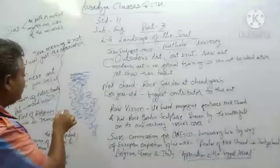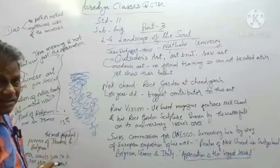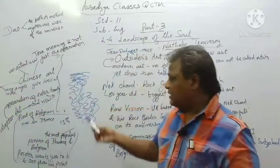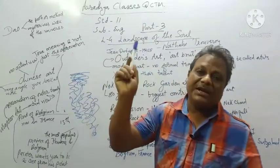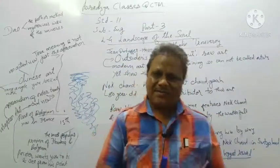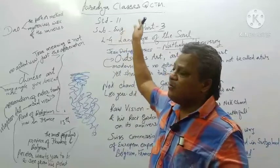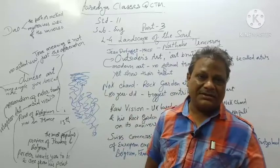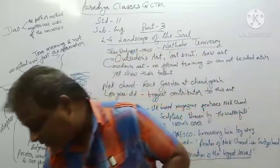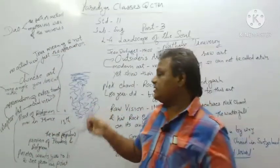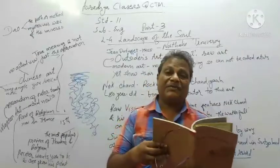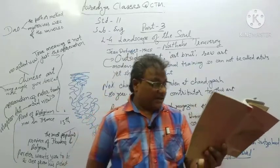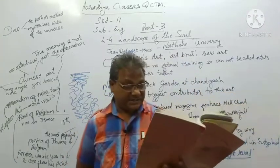The painting of mainstream artists will have a vast difference — main painters will draw mountains, rivers, streams, and many other things. While outsider artists make such things and they understand that they are expressing something about people in different parts of the earth. Around the time Dubuffet was propounding his concept...